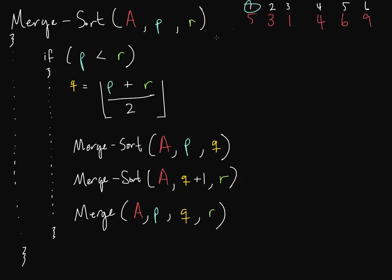Here is our P value and our R value. We're going to start sorting. We check if P is less than R — in this case, 1 is less than 6. If P were not less than R, say both pointed to index 4, there'd be only one element and nothing to sort. Since 1 is less than 6, we continue.